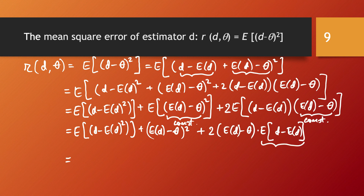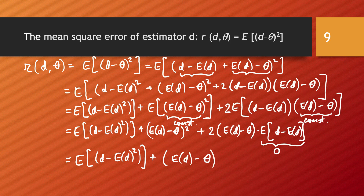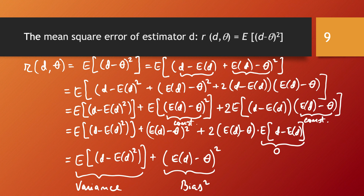When we open up that last factor, the expected value of (D minus E[D]) equals E[D] minus E[D], which is zero — so the cross term disappears. We are left with only two terms: the expected value of (D minus E[D]) squared, which is exactly the variance of D, plus (E[D] minus theta) squared, which is exactly bias squared. So in the end, the risk or mean square error of our estimator D is exactly equal to the variance of the estimator plus the bias squared.